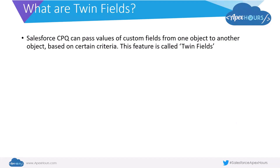Salesforce CPQ can pass values of custom fields from one object to another object based on certain criteria automatically. This feature is called twin fields. As an example, let's say as a sales rep you are selling an internet subscription to a customer.